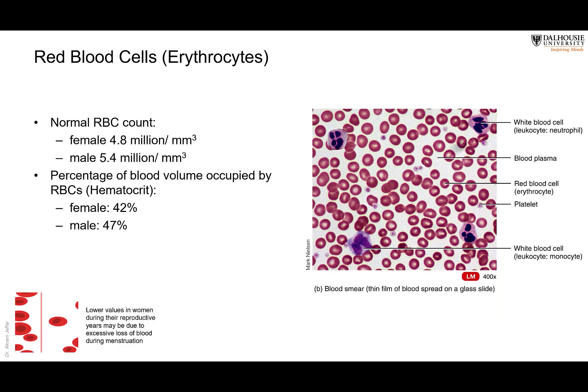The normal RBC count is 4.8 million per cubic millimeter in females, and slightly higher in males. The reason for this difference is that females, especially during their reproductive years, experience menstruation and are continuously losing blood, so the average number of RBCs per cubic millimeter is lower than in males.